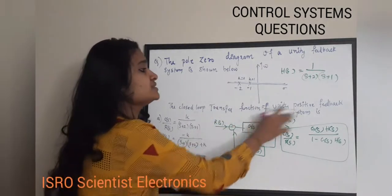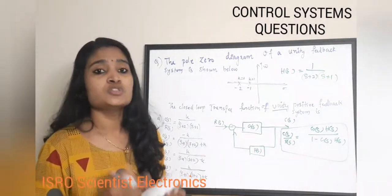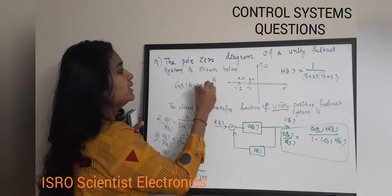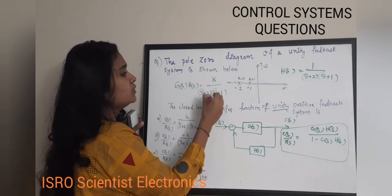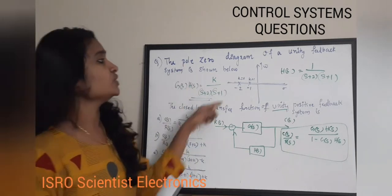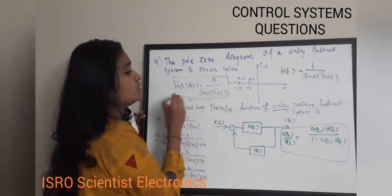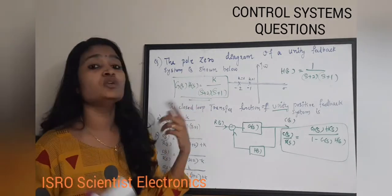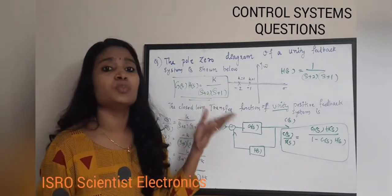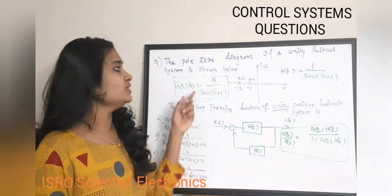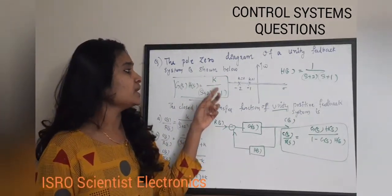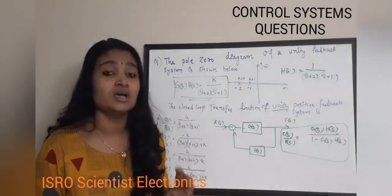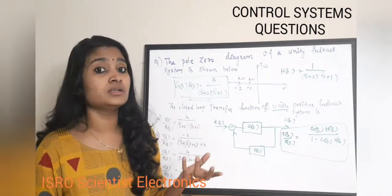Since the system is a unity gain feedback system, we can write G(s)·H(s) as K / [(s+2)(s+1)], where K is some constant. This is the representation of the open loop system, with poles at (s+2) and (s+1), and unity gain represented by K.